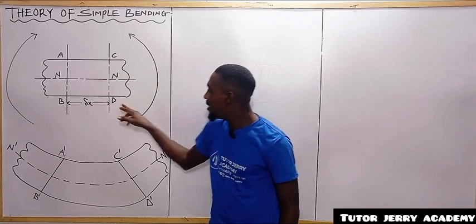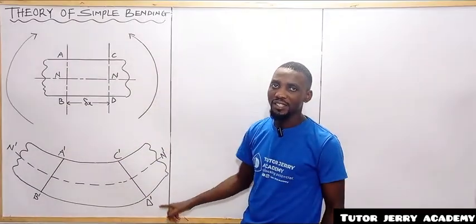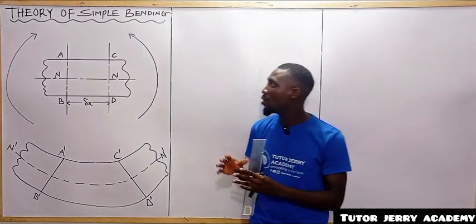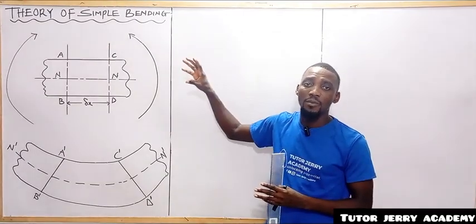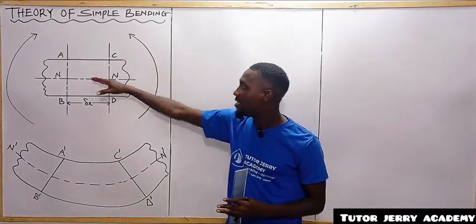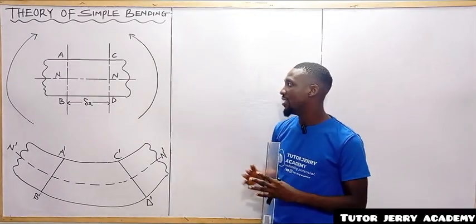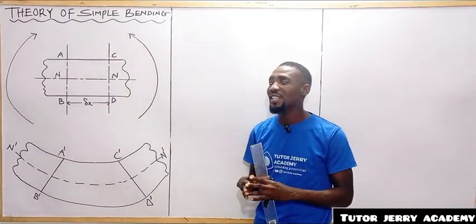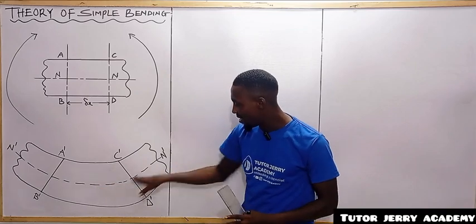Layer BD has been elongated into B-prime D-prime — it has increased in length. At the level between the top and bottom layer, there exists a neutral layer which does not undergo any increase or decrease. The neutral layer remains unchanged and is not affected by the action of the bending moment.